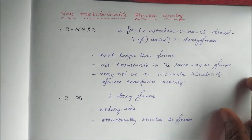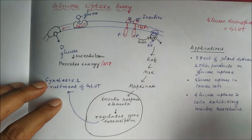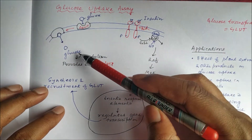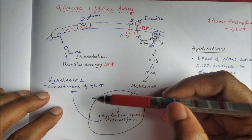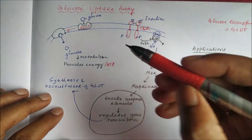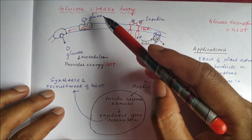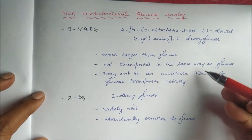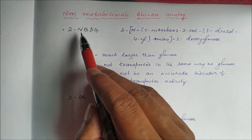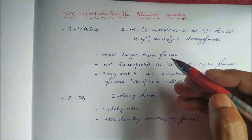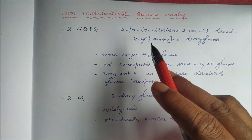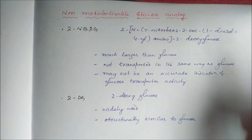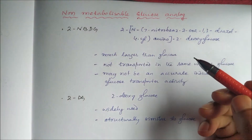We use a glucose analog which does not undergo metabolism. Glucose normally undergoes glycolysis and the Krebs cycle, but we need an analog that is not metabolized inside the cell. We have two analogs: one is 2-NBDG and the other is 2-DG (2-deoxyglucose). 2-NBDG stands for N-(7-nitrobenz-2-oxa-1,3-diazol-4-yl)amino-2-deoxyglucose.